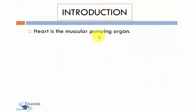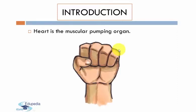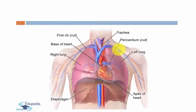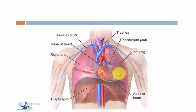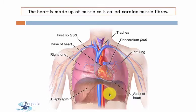The heart is the muscular pumping organ. The adult heart is about the size of a closed fist. It is located in the chest cavity, slightly towards the left, enclosed in a double-walled sac called pericardium. A pericardium fluid is present between the heart wall and pericardium. The heart is made up of muscle cells called cardiac muscle fibers.